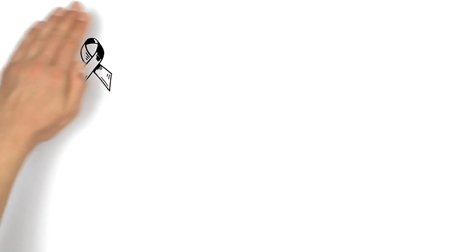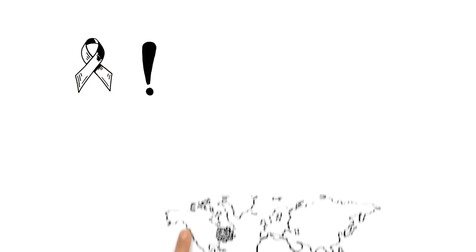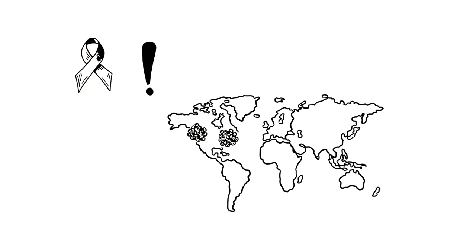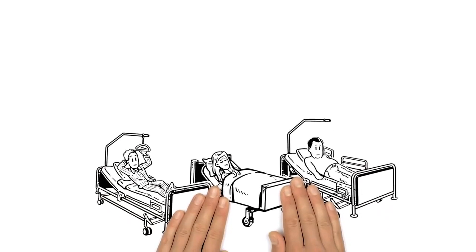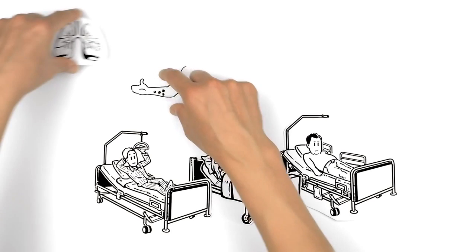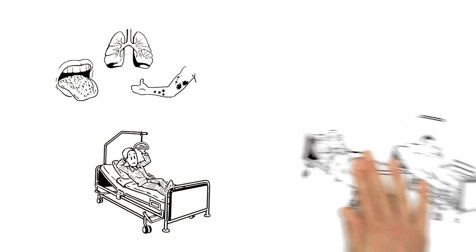AIDS remained undiscovered until a sudden outbreak among gay men in New York and San Francisco in 1981. Very quickly, people began developing the same unusual symptoms around the world. The patients suffered from rare forms of skin cancer, pneumonia or thrush, and few survived.